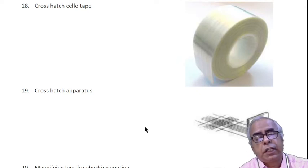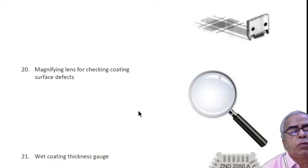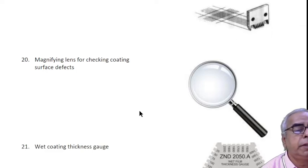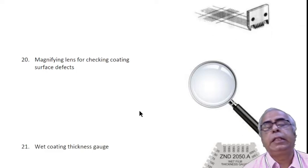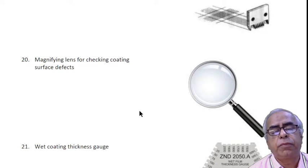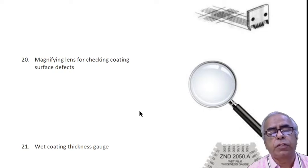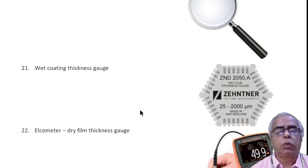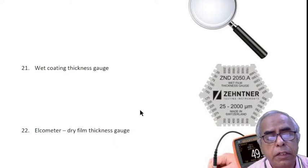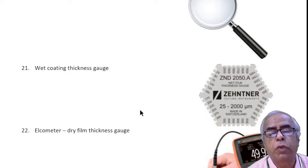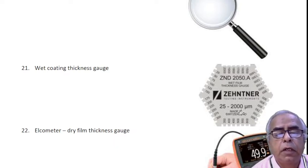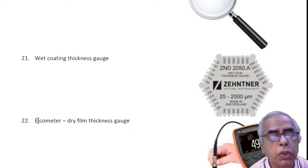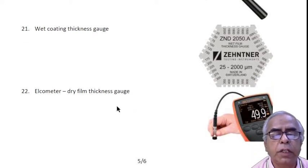Magnifying lens is useful for checking coating surface defects. We have coating thickness gauge for measuring dry film thickness and wet film thickness. These things can be easily studied. For wet coating, this kind of coating thickness gauge is used. For dry film thickness, we can use the Elcometer.